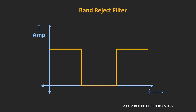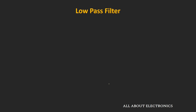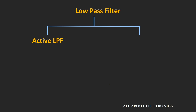In this video, we will focus on the low-pass filter. This low-pass filter can further be classified into two types: active filter and passive filter. This classification is based on the components used for the design. If the filter is designed using active components like op-amps and transistors, it is known as an active low-pass filter. If designed using passive components like resistors, capacitors, and inductors, it is known as a passive low-pass filter.